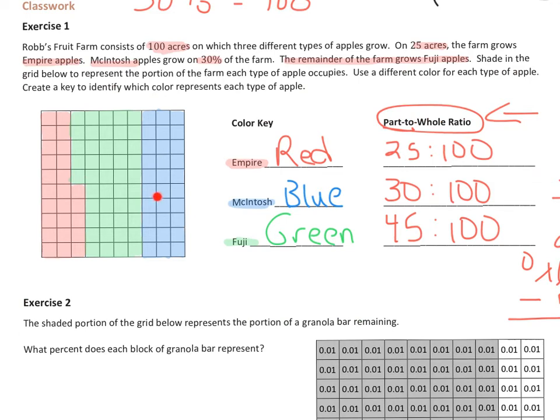Okay, so here you can see blue is my Macintosh and I filled in 30 of 100. Green is my Fuji and that was the remaining. That was 45. And then, of course, I already showed you the red.